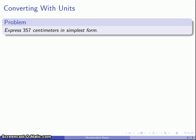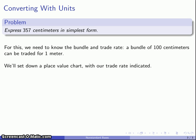What that means is that whatever we have left, we cannot make a trade to any larger unit. So we need to know the bundle and trade rate. 100 centimeters can be traded for 1 meter. And we can start out by setting down a place value chart. And for reference, we'll keep our trade rates there.